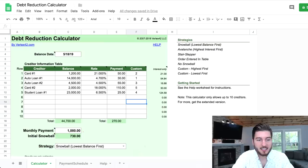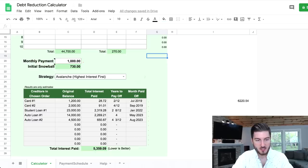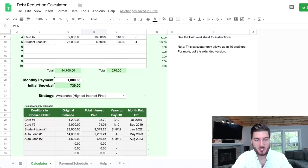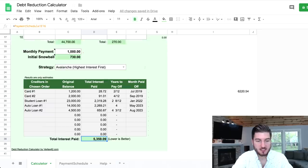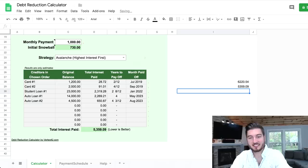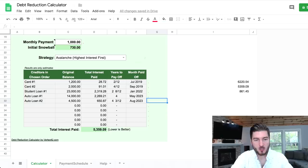Remember, the debt avalanche lists the debt in order of highest annual percentage rate to the lowest. So credit card one at 21%, the second credit card at 18%, the student loan at 6.5%, and the auto loans. But now check this out: the total interest paid is now $5,359.09, which is a difference of $861. You're actually paying off these debts a little bit quicker just because you're paying less principal over time.